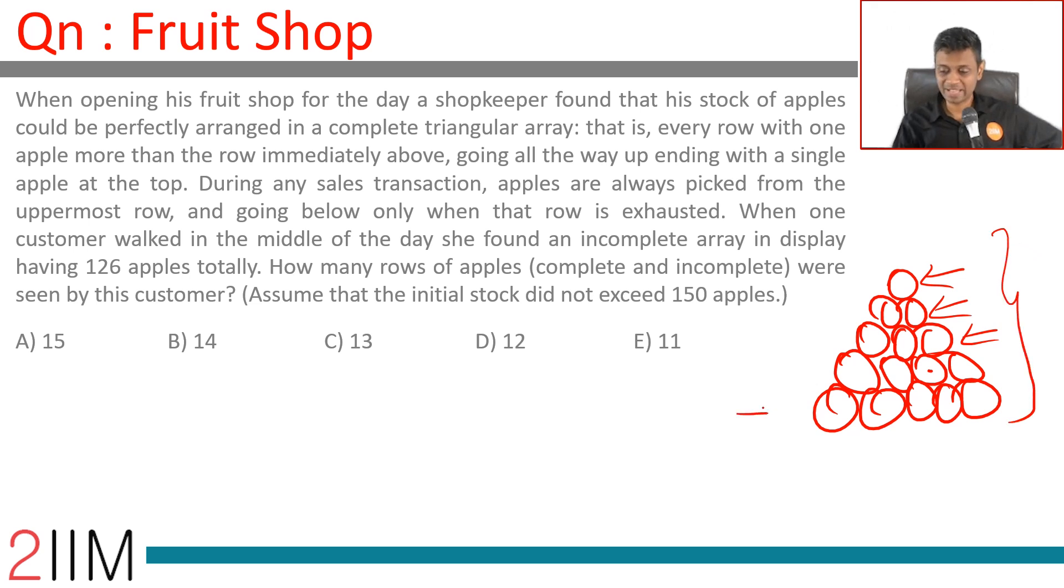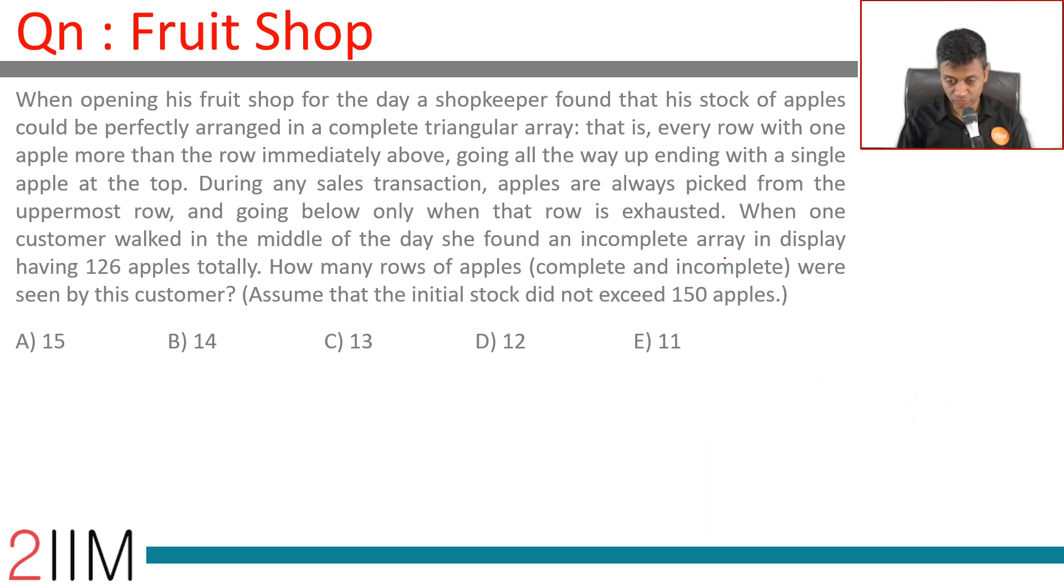The total number of apples in the nth row: you're doing 1 plus 2 plus 3 plus 4 plus 5, all the way till n. Total apples at the beginning of the day is n into n plus 1 by 2.